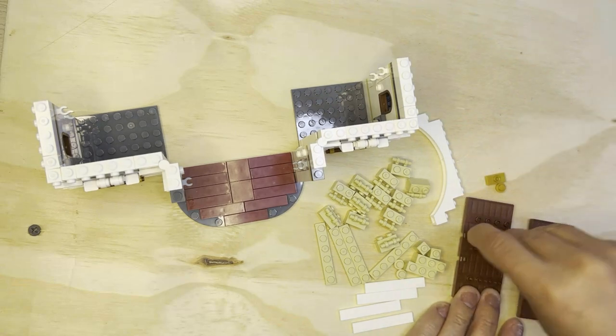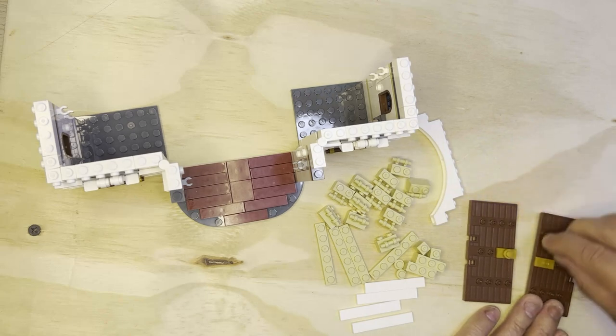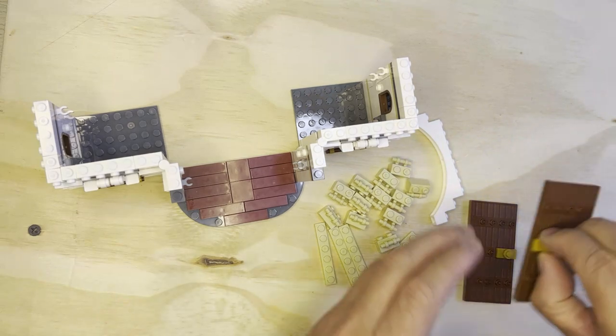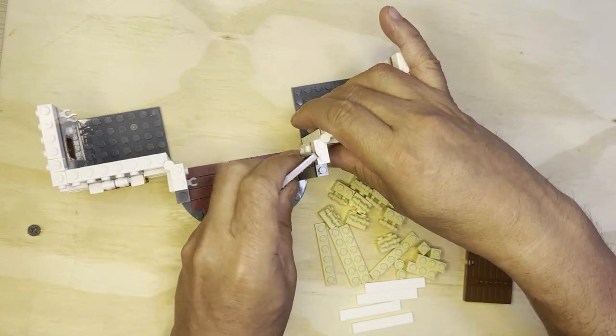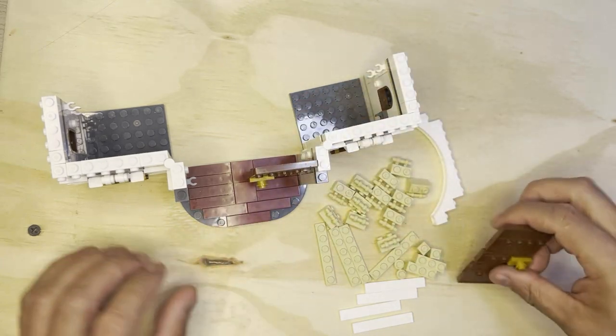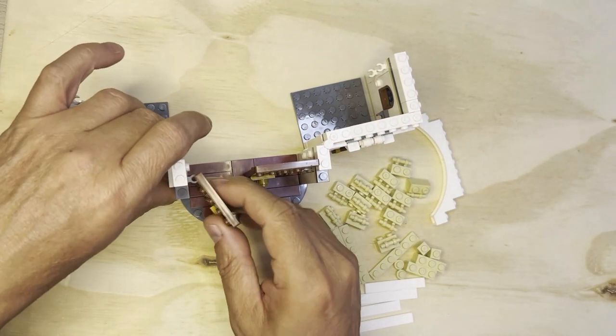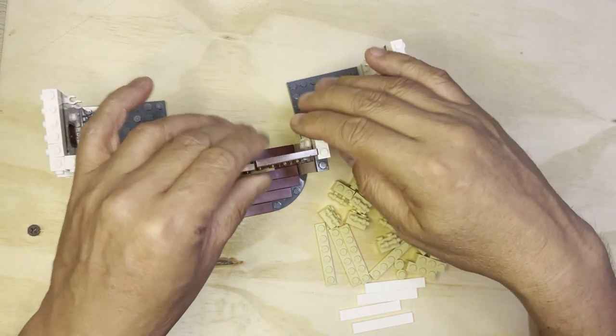These are going to go like this. This is going to go like that. And these doors are going to go on here like that. This one will go like that. And there you go. Big bronze doors.